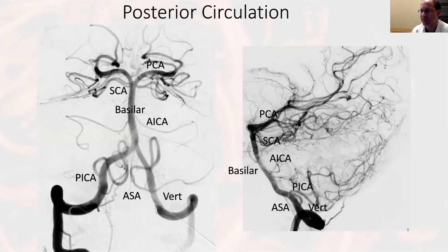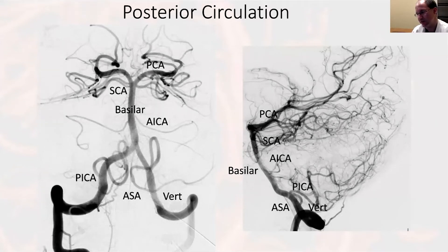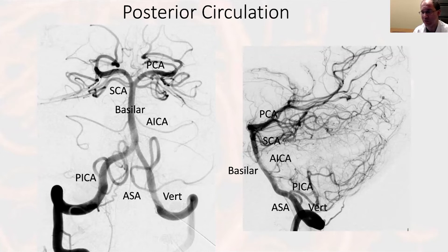Here's a view of the posterior circulation. This is a vertebral injection from the right vertebral artery. You can see I've labeled the PICA, the anterior spinal artery in the middle, the basilar artery, and then the relevant branches of the basilar artery — the AICA, the SCA, and the PCA — in a more trans-facial view. So this is more like a coronal view on the left, and to the right is a lateral view.